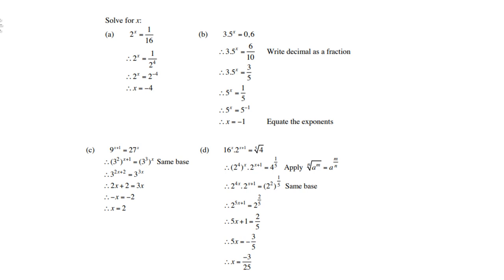Look at b. 0.6 is 6 over 10. If you simplify, it becomes 3 over 5. Then you can divide by 3 on both sides, and you get 5 to the power x equals to 1 over 5. Then 1 over 5 is 5 to the power negative 1. Therefore, x equals to negative 1.